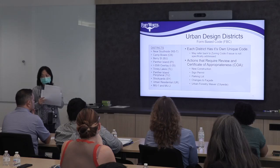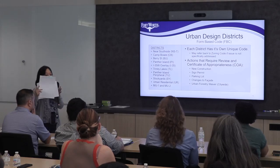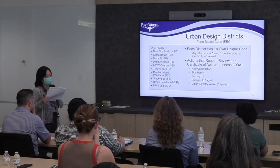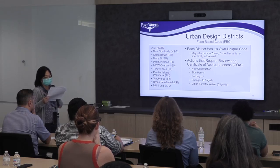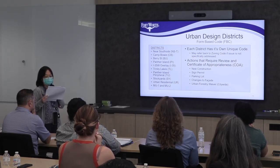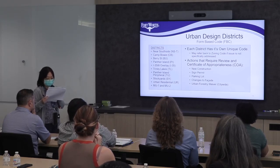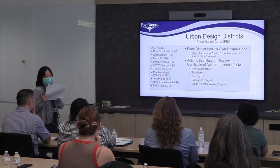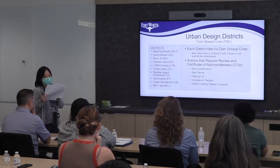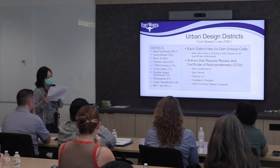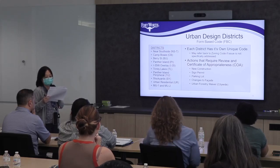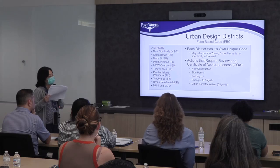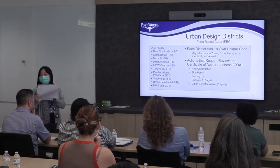There are several conditions where you need a COA before you go to the permit. First, when you construct a new structure; second, when you do an expansion of an existing structure; third, when you do an alteration of the exterior of an existing structure; fourth, when you construct a surface parking lot; fifth, when you construct a sidewalk or other roadside improvements within a public right-of-way; and last, when you install permanent signage.